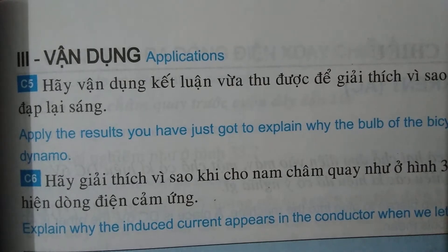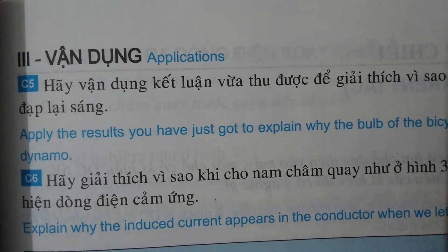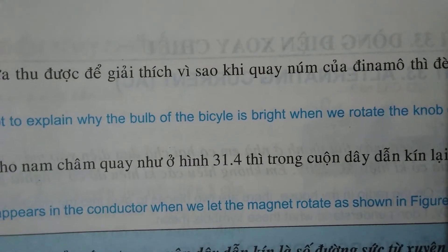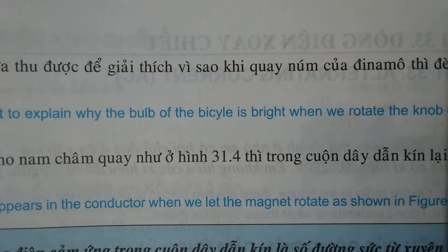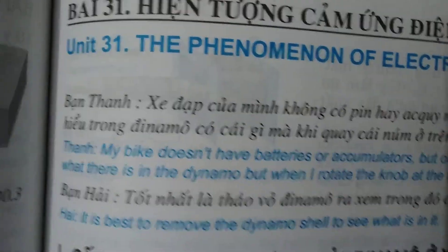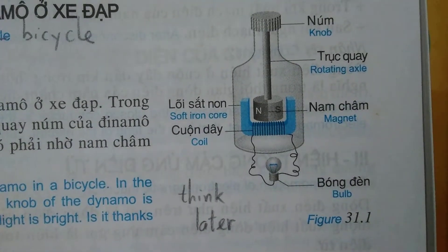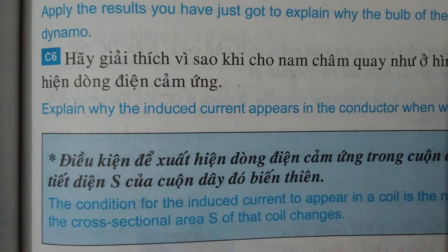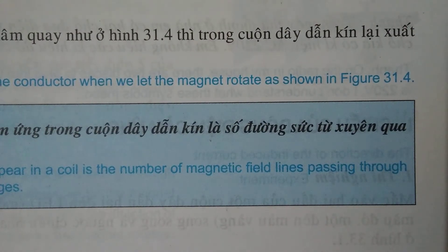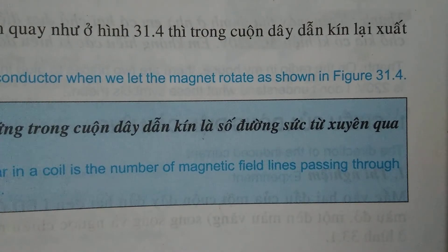Apply the results you have just obtained to explain why the light of the bicycle is bright when we rotate the knob of the dynamo. Also explain why the induced current appears in the conductor when we let the magnet rotate, as shown in figure 31.4.